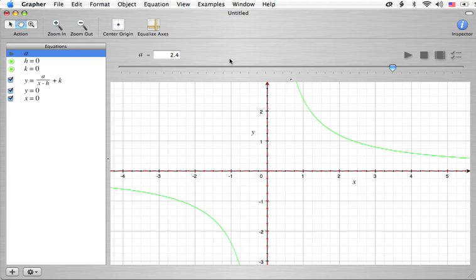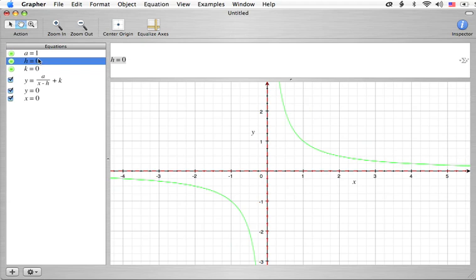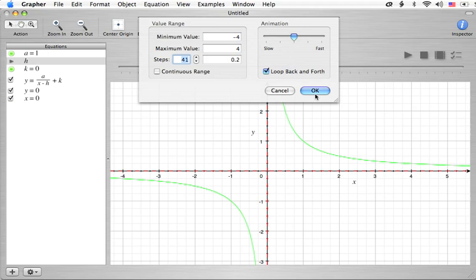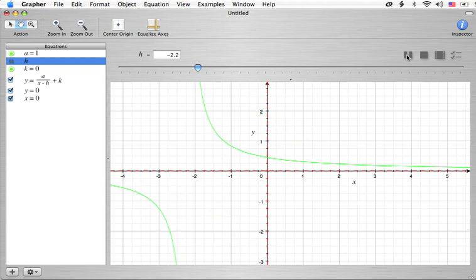But let's just go on and take a look at what happens when we change h. Now, hopefully, you have a pretty good idea of what changing h will do. I want to go up here. And again, minus 4 to 4. And let's hit the OK and hit the play button.